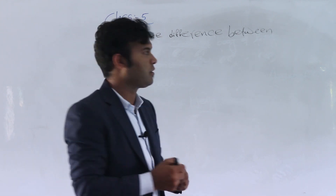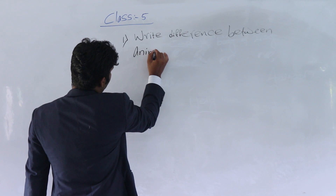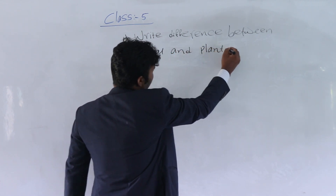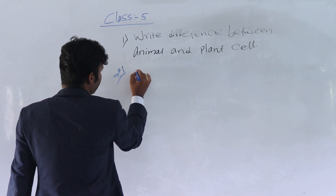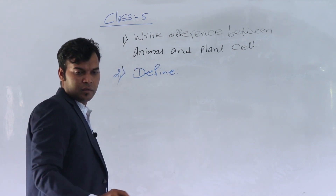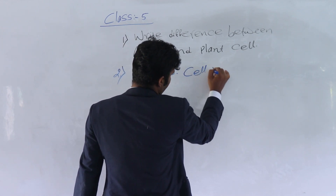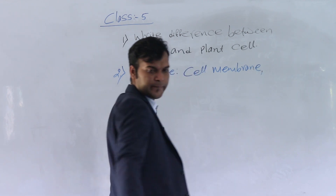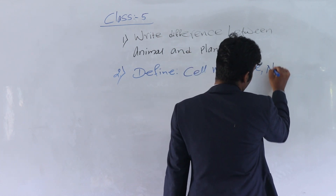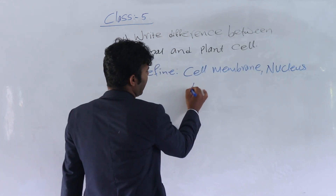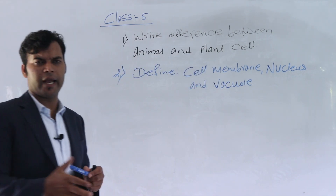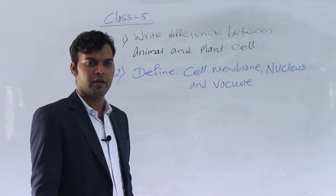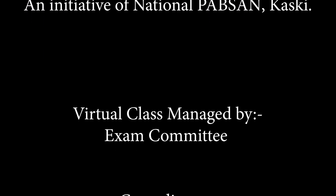Please write the following questions. Number one: write the differences between animal cells and plant cells. Number two: define cell membrane, nucleus, and vacuole. Okay students, thank you.